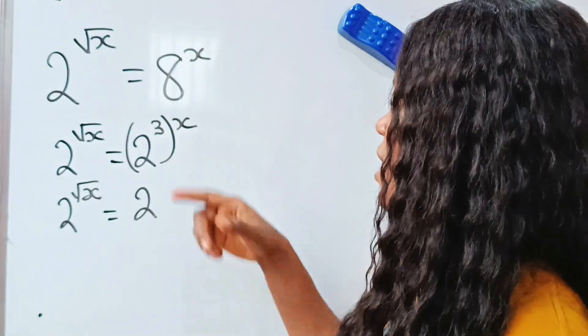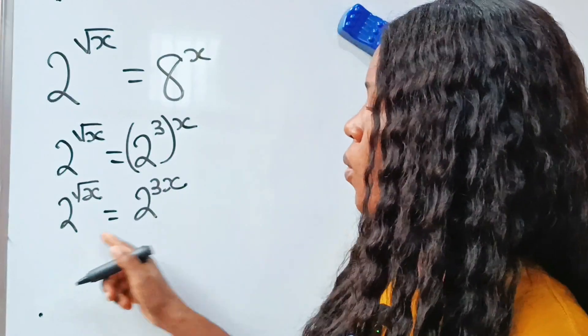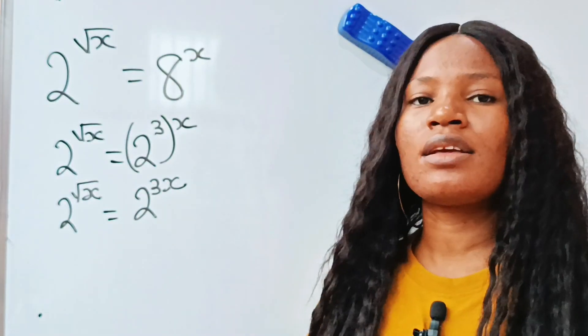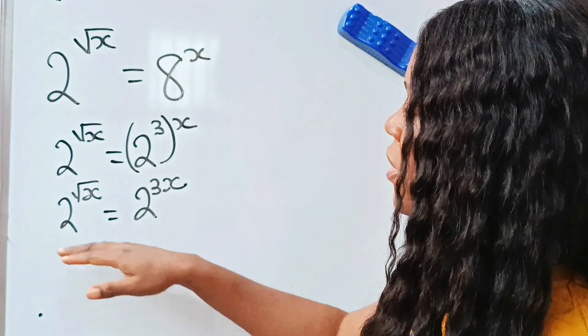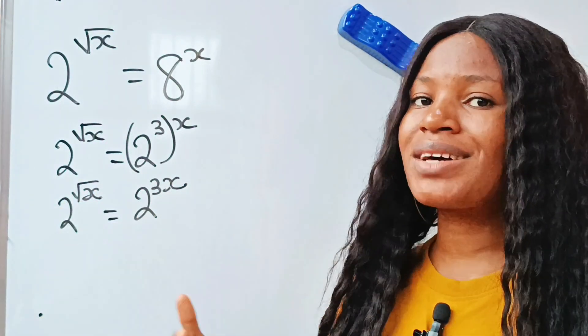So 3 times x will give us 3x. Now whenever you are solving any question on indices or exponents, anytime you have the same base you'll equate your powers. It means that the powers are equal.